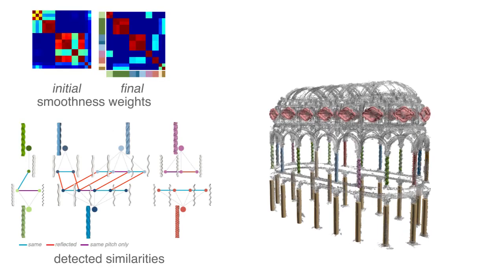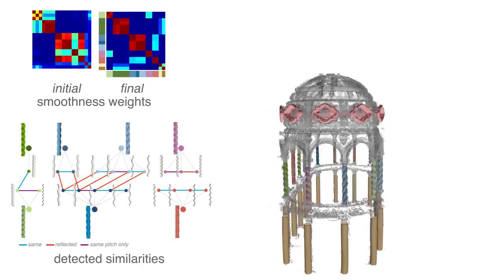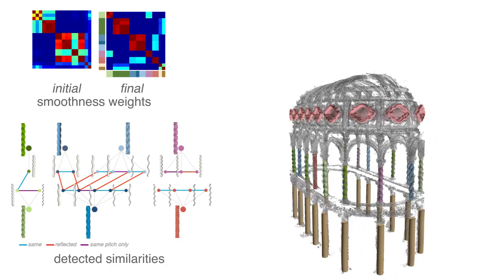We also evaluate our algorithm on a 3D scan of a museum containing helical columns. Using a parametric deformation model, our analysis discovers similarities between the individual helical substructures each column is composed of.